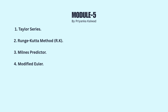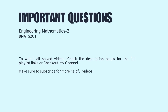Module 5: First, Taylor series. Second, Runge-Kutta method (RK method). Third, Milne's predictor. Fourth, modified Euler. These are the important questions from all five modules.